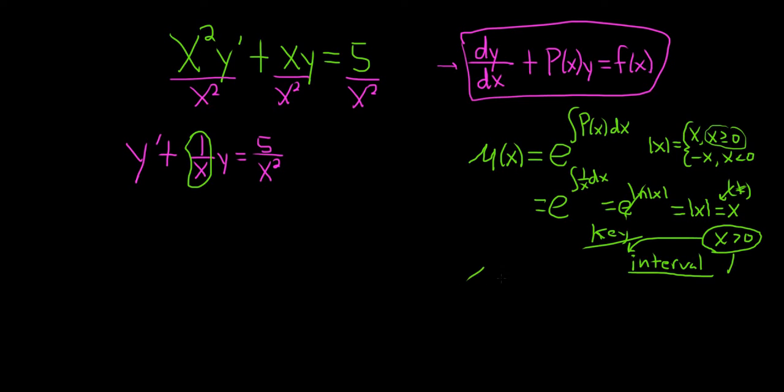So now that we have mu of x and we said it was equal to x, I'm going to put it in a box just so we have it. The next step is to multiply our DE that's in standard form by the integrating factor.